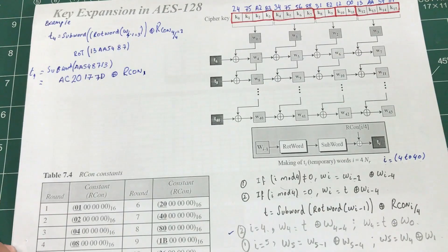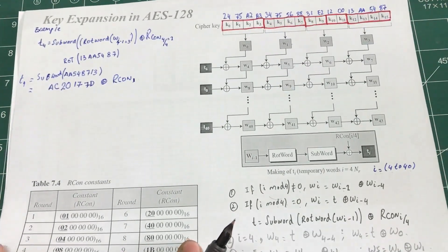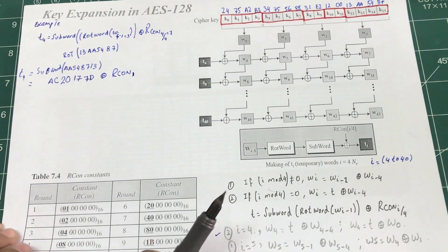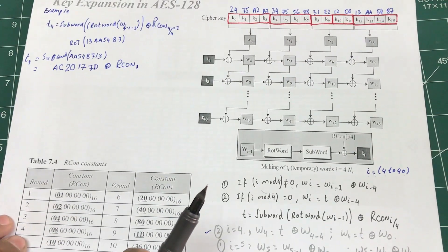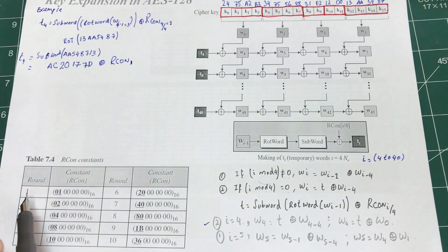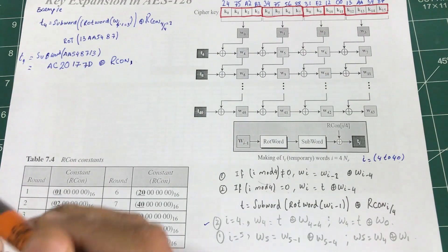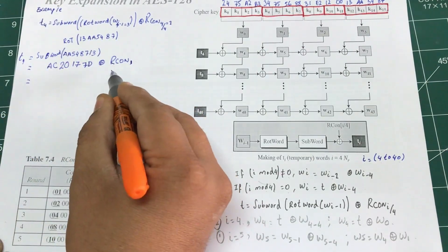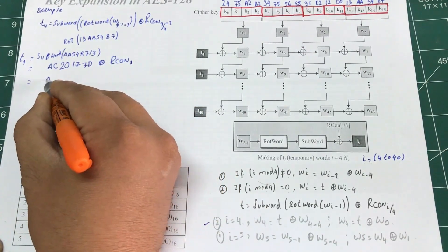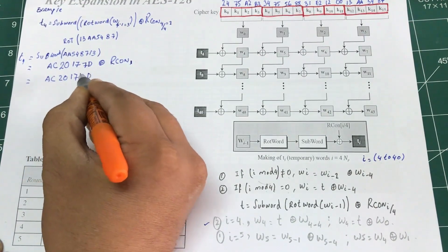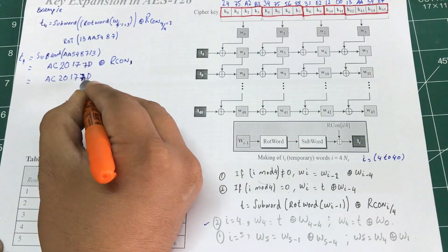Let's look at my Rcon table. Rcon[1] is the value for round 1 — this is part of the standard. So I'm going to XOR AC20177D with Rcon[1]. The Rcon value is 01000000. I put it underneath the most significant bit: AC, then 01, then 00, 00, 00.